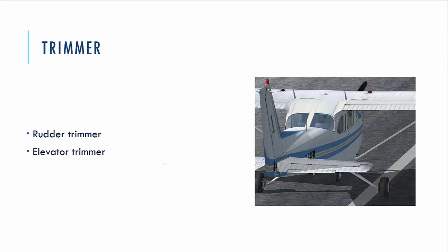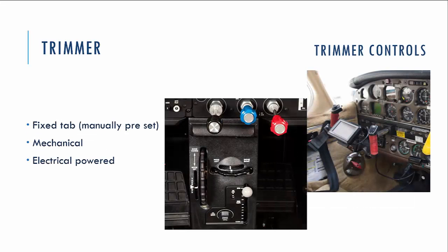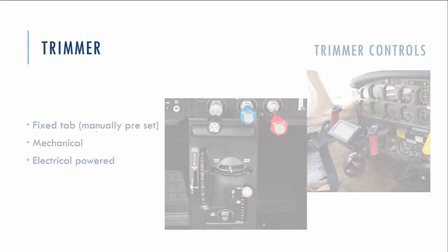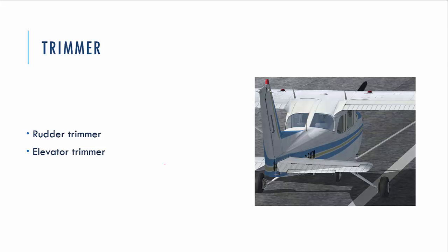The trimmer is not a primary control surface but a secondary control surface. We use it to eliminate forces on the elevator and rudder — ultimately eliminating control forces on the yoke to zero. In the cockpit, trimmers can be mechanical knobs turned up/down or left/right, or electric-powered trimmers controlled by buttons on the yoke or switches on the dashboard. There is also a fixed tab trimmer that is manually preset during aircraft maintenance.